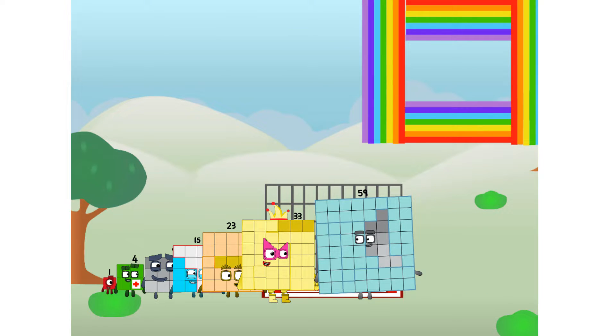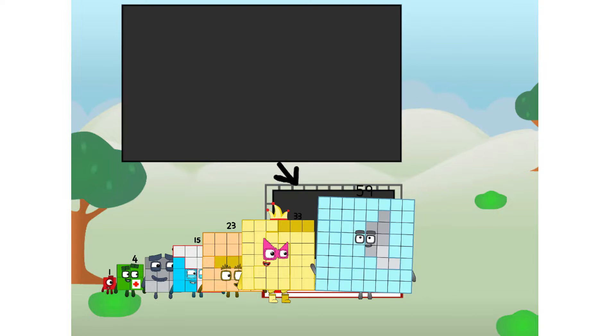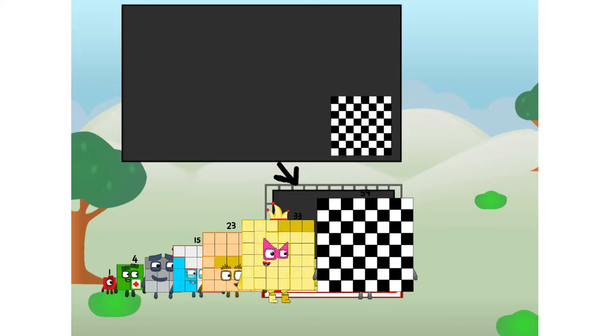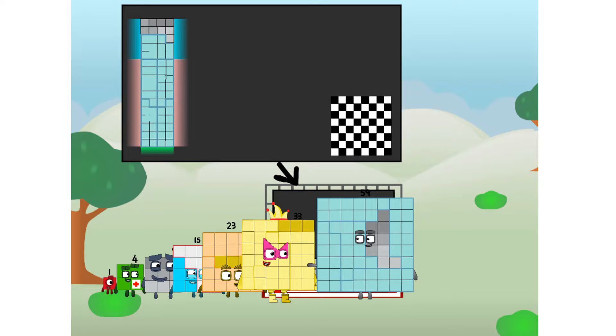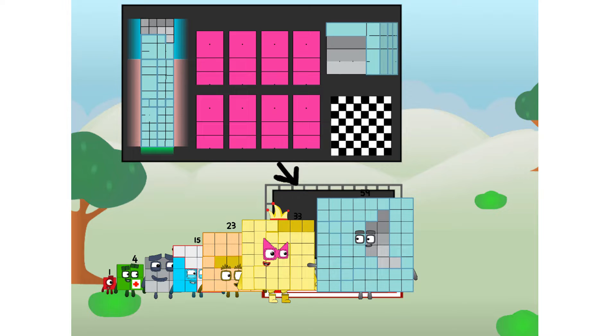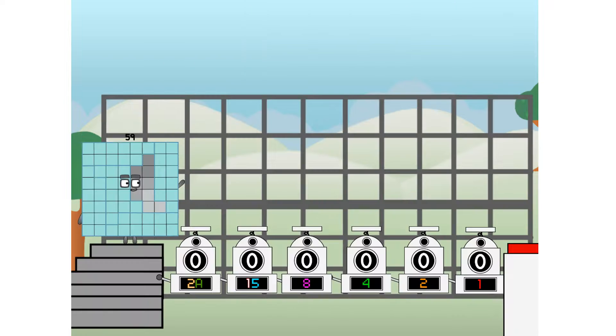There you are. This way. I've got so much to show you. I am 59, and I can be a strong square, a medical chessboard, a super rectangle, 8 octoblocks, or even a super cube. But today, I want to show you a little trick I call binary boosters.